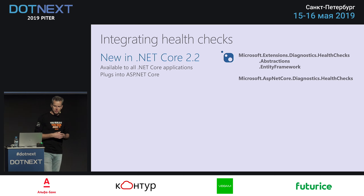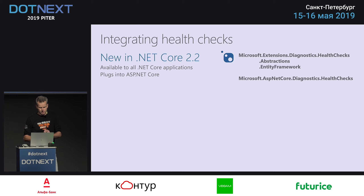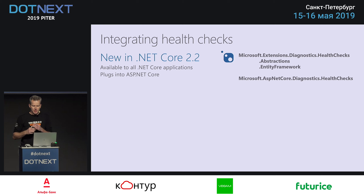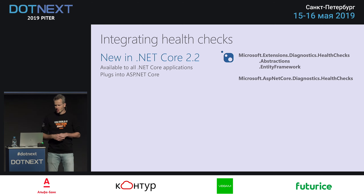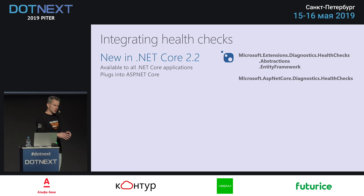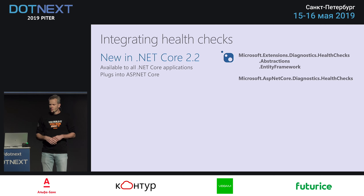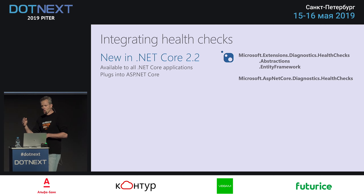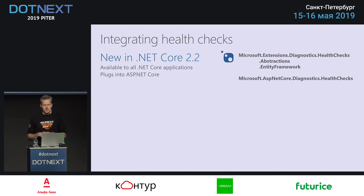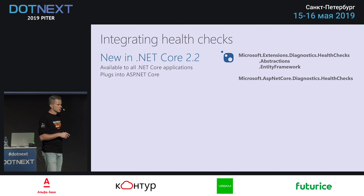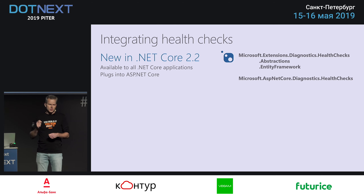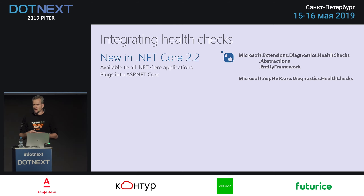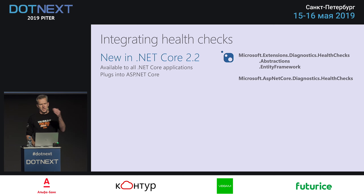Now let's step to .NET Core 2.2. In .NET Core 2.2, they introduced health checks for diagnostics. It consists of three NuGet packages: the health checks package with all the implementation, the abstractions package with all the interfaces and generic stuff, and an Entity Framework package which is a single health check related to DB context. You don't have to use ASP.NET Core for this, but ASP.NET Core is really good for offering the health endpoints via its middleware.